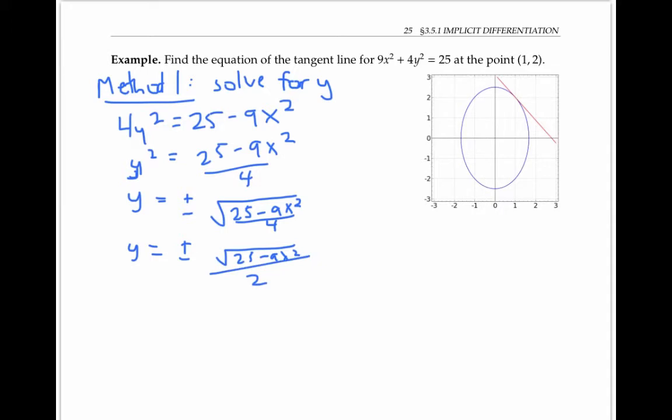The plus answer is giving us the top half of the ellipse, and the minus answer is giving us the bottom. Since the point (1,2) is on the top part of the ellipse, let's focus on the positive version and take the derivative. But first, let me rewrite one more time to put it in a slightly easier form. Instead of dividing by 2, I'm going to think of multiplying by the constant 1/2. And instead of taking the square root, I'm going to write that as an exponent of 1/2.